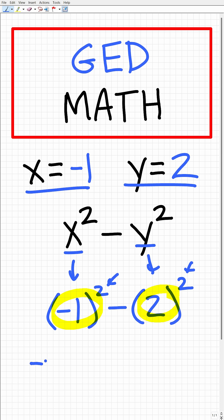Negative 1 squared means negative 1 times negative 1. A negative times a negative is a positive, so negative 1 squared is a positive 1. Then minus 2 squared, which is 2 times 2, or a positive 4.